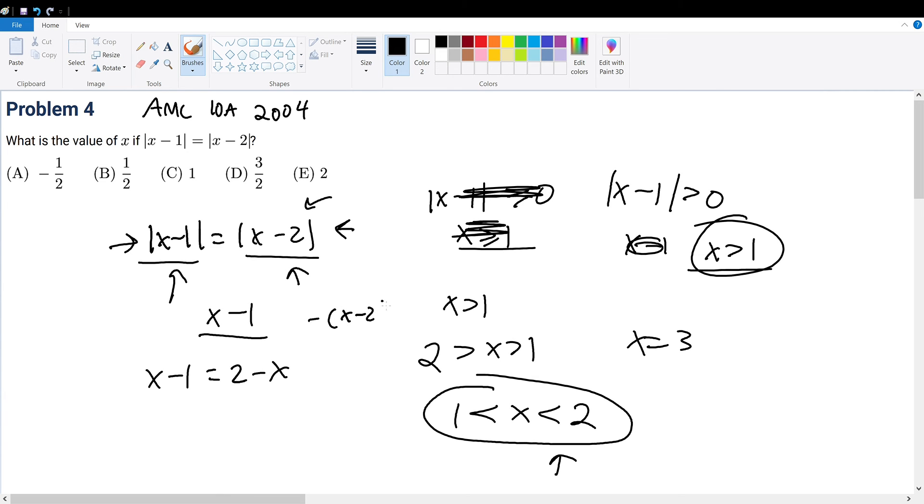If we negate x minus 2, so therefore, this will be the same thing as 2x equals 3, x equals 3 over 2. So this will bring us to answer choice D.